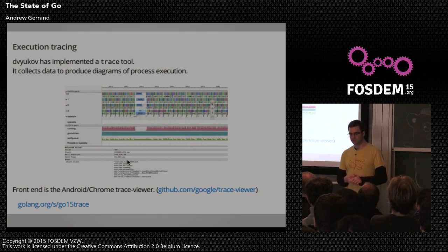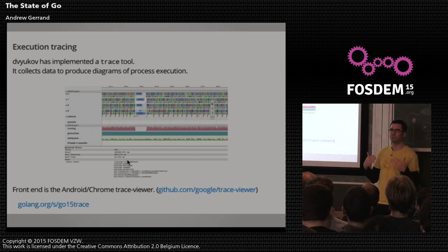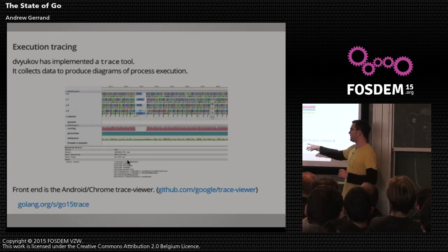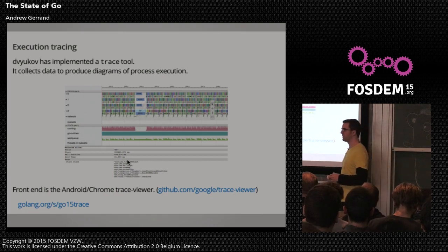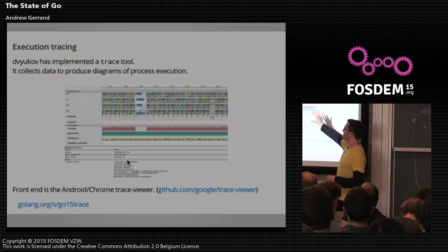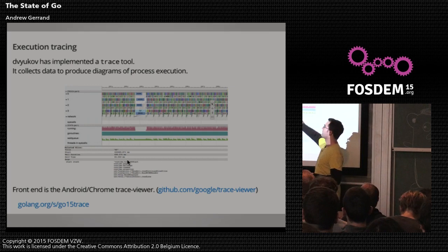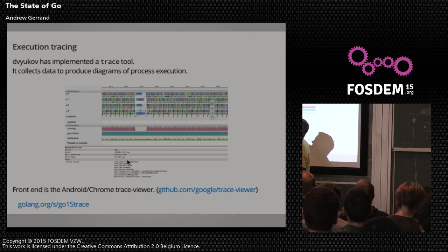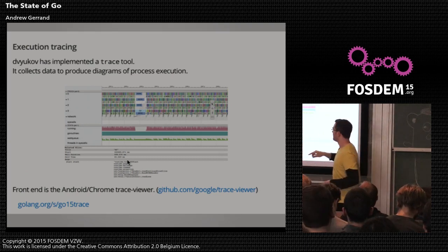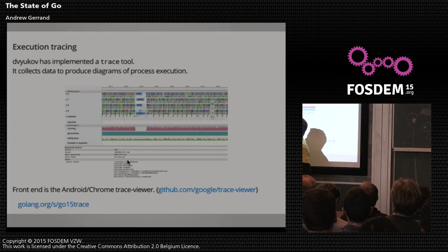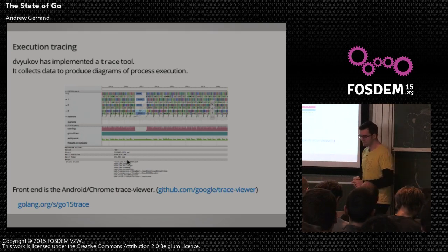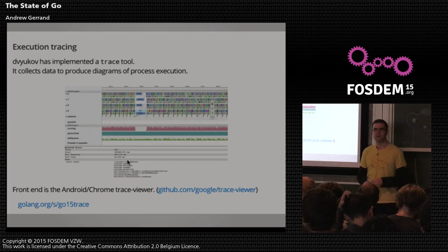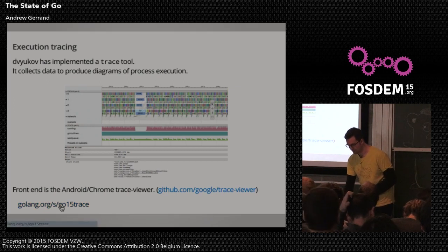There's a new execution tracer that will be part of the Go toolchain. You'll be able to enable execution tracing in your Go binary — it dumps tons of information to disk about what the program is doing and when. Then you can use Google's trace viewer, which both Android and Chrome use, to generate diagrams and explore those logs. You can see which goroutines are running which code, GC pauses, goroutine counts, which functions are executing, and stack information. The CLs to put this into the core were sent out over the last week.